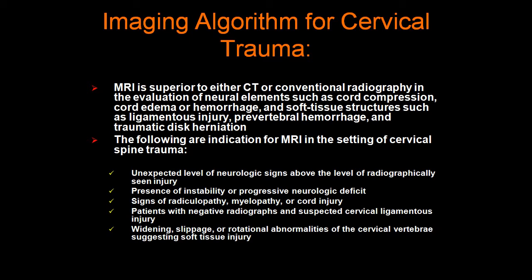First, if there is an unexpected level of neurologic injury above the level of radiographically seen injury; the presence of instability or progressive neurological deficits; signs of radiculopathy, myelopathy, or cord injury; patients with negative radiographs and suspected cervical ligamentous injury; and finally, widening, slippage, or rotational abnormalities of the cervical vertebrae suggesting soft tissue injury.